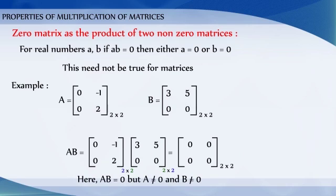Thus, if the product of two matrices is a zero matrix, it is not necessary that one of the matrices is a zero matrix.